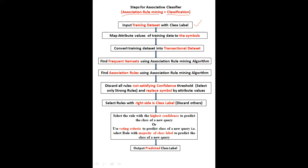The input to this technique is the training dataset with the class label. After this, we convert the attribute values of this training dataset into symbols. For simplicity, because your training dataset will have categorical values, and we need to convert these categorical values into symbols for simplicity. When we discuss the example, we will discuss how we can convert or map these attribute values into symbols.